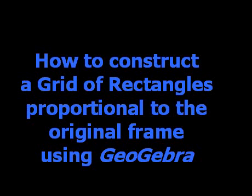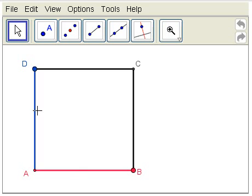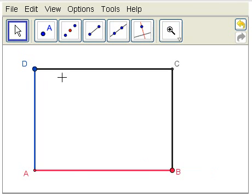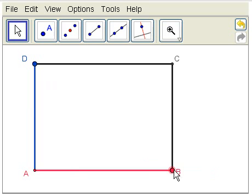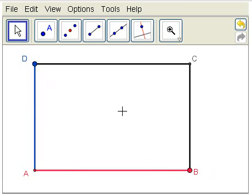How to construct a grid of rectangles proportional to the original frame using GeoGebra. In this applet, we have a flexible rectangle which we're going to chop up into smaller rectangles that look just like the original, proportional in terms of length and width.